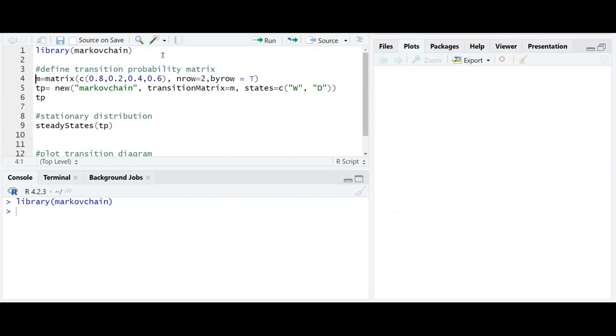Next, we give tp equals to new Markov chain transition matrix equals to m and states we have given W and D. As in our question, it was for wet day and dry day where W was wet day, D was dry day. Next, we will give tp.